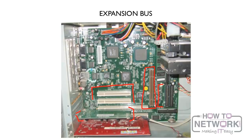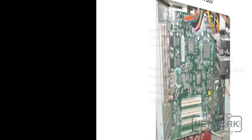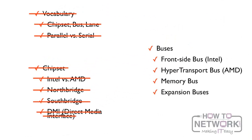In the next video, we're going to talk about these specific expansion buses and the differences between them. But before we get there, let's just recap what we've talked about: all the different buses — front side bus, hyper transport bus, memory bus, and expansion buses.